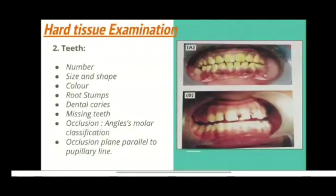Intraoral examination is divided into two components: hard tissue examination and soft tissue examination. For hard tissue examination of teeth, the following points are assessed: number, size and shape, color, any supernumerary or impacted teeth, extent of dental caries, any missing teeth, and occlusion, which is classified using Angle's molar classification.